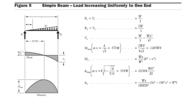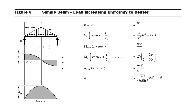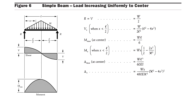Now we move to the next condition: a simply supported beam carrying a load increasing uniformly to the center — this is also a triangular load, as shown in figure 6. The maximum bending moment is wl/6 and occurs at the center. The maximum deflection is 5wl³/60EI and also occurs at the center.